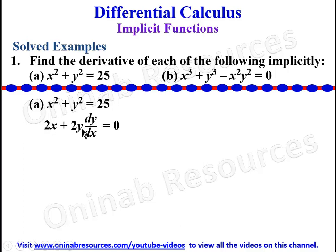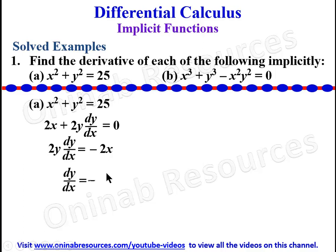We now make dy/dx the subject of the relation. Taking 2x to the other side, we have 2y·dy/dx = −2x. The 2s cancel, so dy/dx = −x/y. That gives the derivative of the function in problem 1(a).